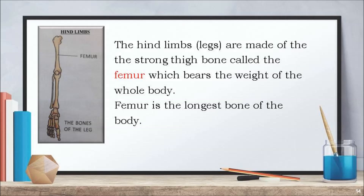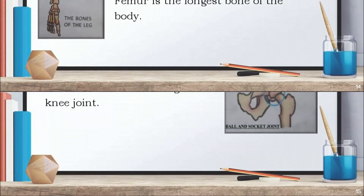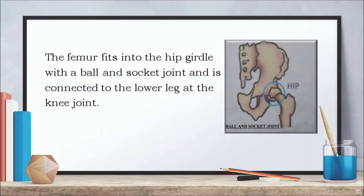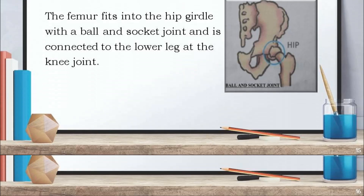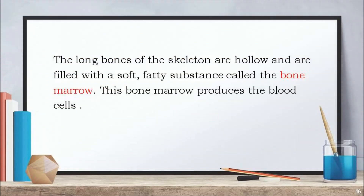The hind limbs are made of the strong thigh bone called the femur, which bears the weight of the whole body. Femur is the longest bone of the body. The femur fits into the hip girdle with a ball and socket joint and is connected to the lower leg at the knee joint. The long bones of the skeleton are hollow and are filled with a soft fatty substance called the bone marrow.